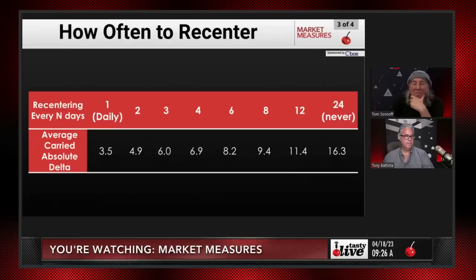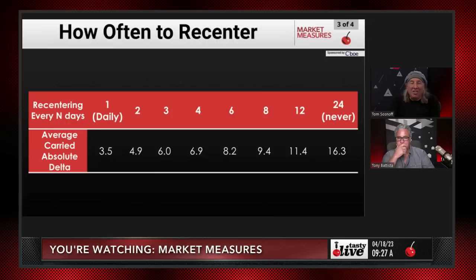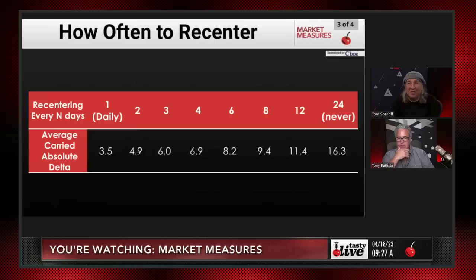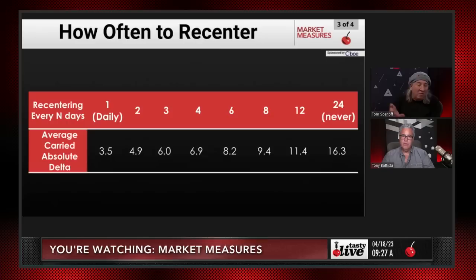This is the meat of it. Using SPY data, after 24 days without recentering, deltas move from the original 20-delta strangle to about 16.3 net deltas. So on a position that started at 20 delta puts and 20 delta calls, you end up carrying 16 net deltas — one side could be 36, the other 20, netting to 16. That's 160 deltas on a 10-lot position.